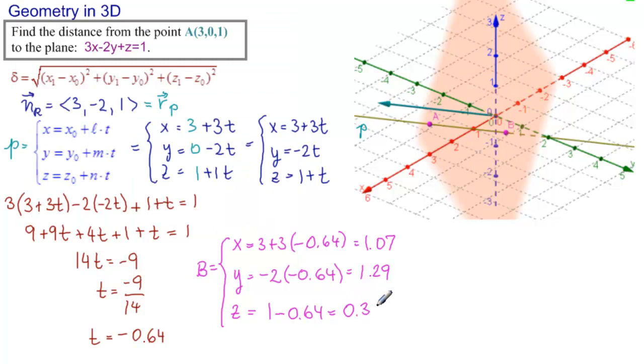0.36. So this is our point B equal to 1.07, 1.29, and 0.36.